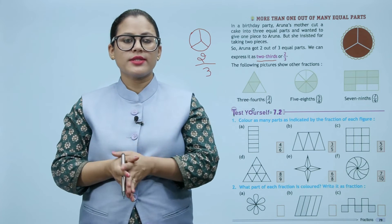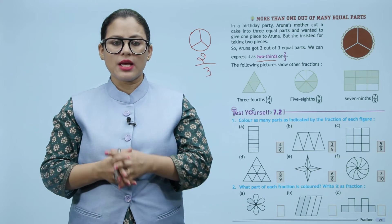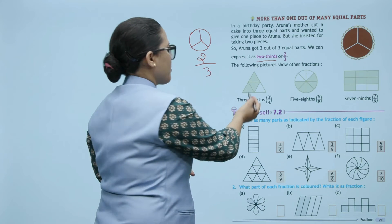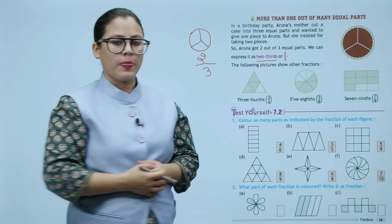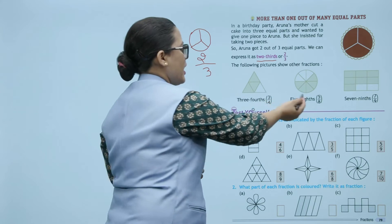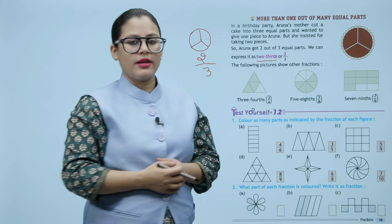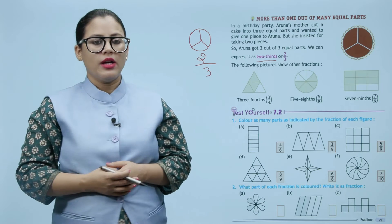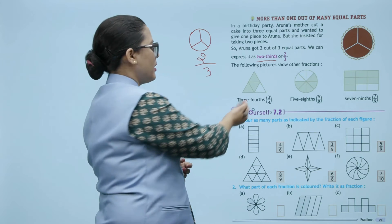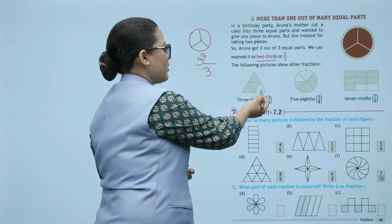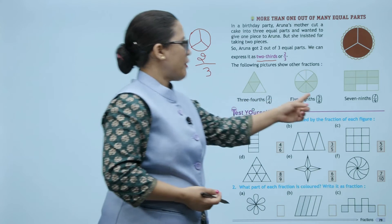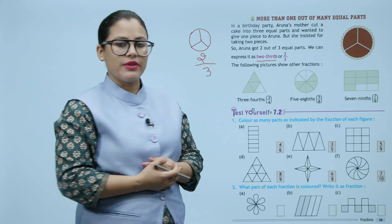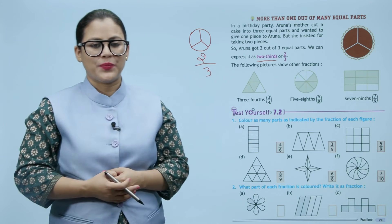The following pictures show other fractions. Look at this figure — there are four equal parts. In this figure there are four equal parts; in this figure there are eight equal parts; in the next one there are nine equal parts. How many colored parts? Three — so that is three by four. Five-eighth, seven-ninth.